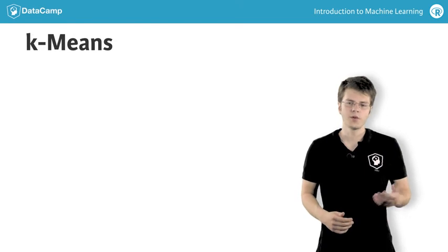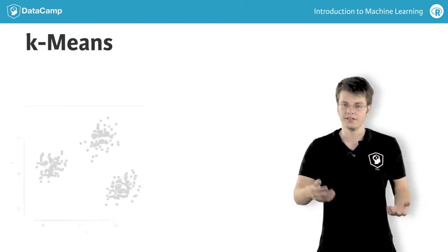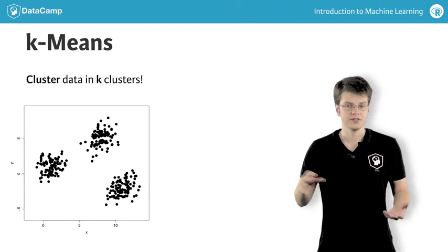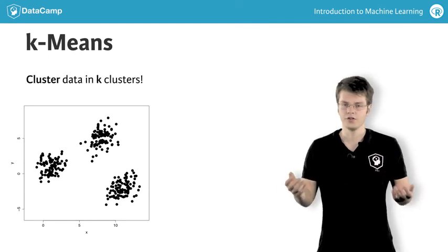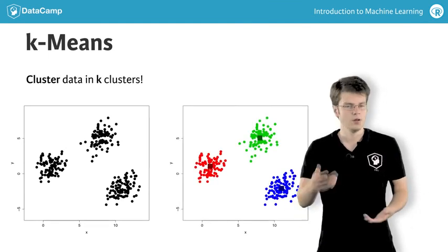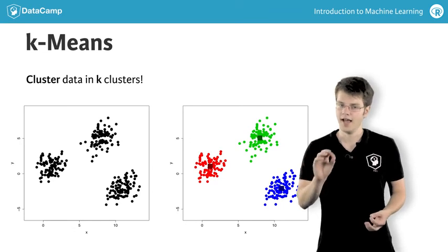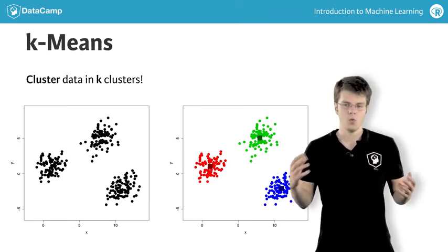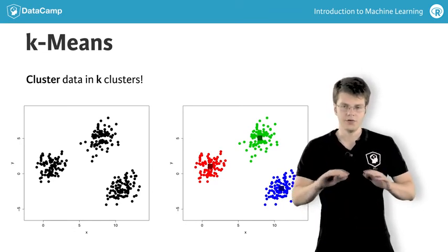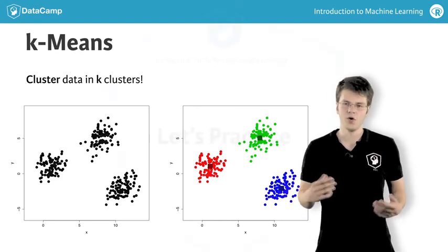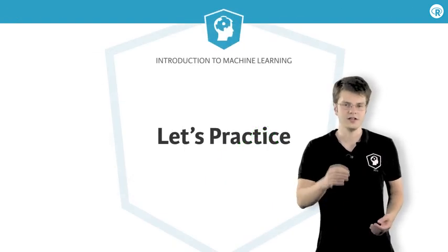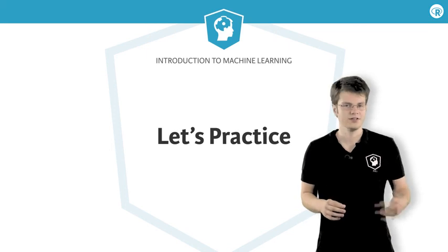An intuitively straightforward clustering method is k-means. This method will cluster your data in k clusters based on some similarity measure. More on this in the fifth and final chapter of this course. Enough theory for a while — it's time to roll up your sleeves, head over to the exercises, and tackle some classification, regression, and clustering problems.